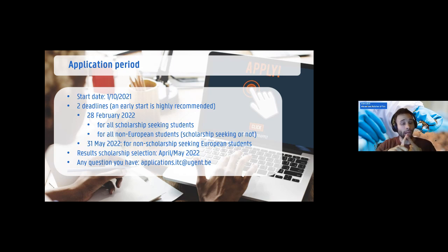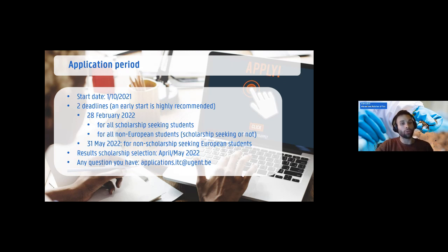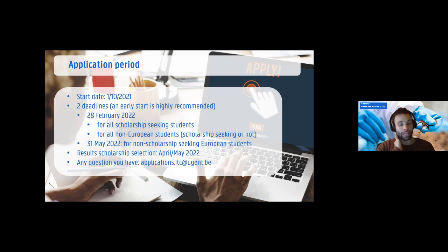The 28th of February deadline applies to both EU and non-EU applicants who want a scholarship. It is also the final deadline for all non-EU applicants. If you are living in the EU or are a European national, the 31st of May is the final deadline for application — but at that point, you will not be considered for a scholarship anymore. Scholarship results are usually available mid-April.